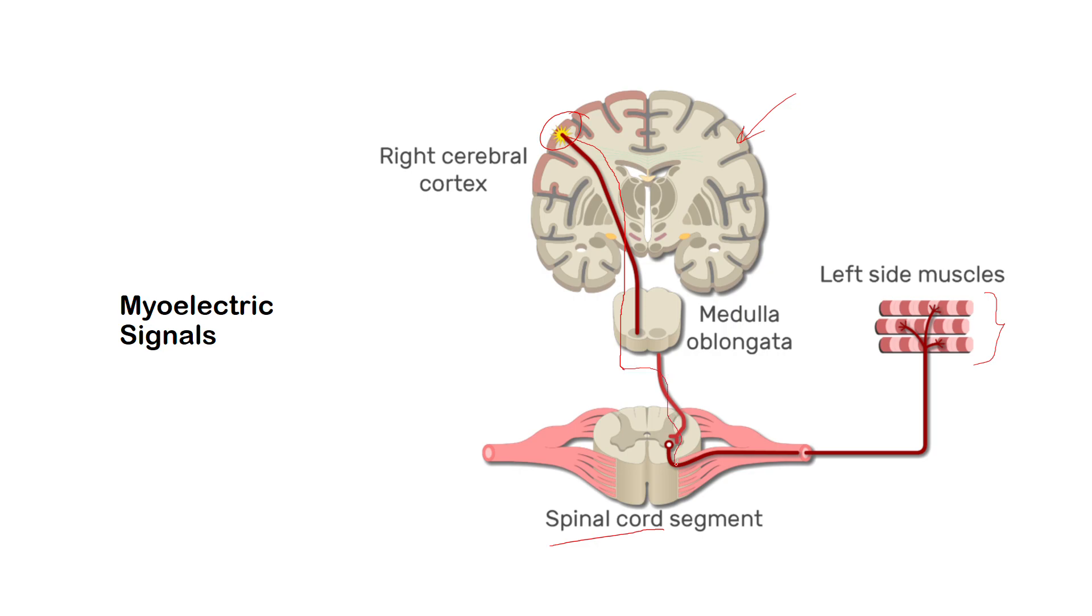The electrical signal travels across the spinal cord and then a motor unit, which consists of a motor neuron and muscle fibers. When the motor neuron and the muscle fibers meet, then you can activate this portion of the body.